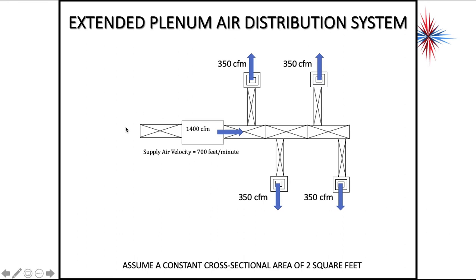This is an example of an extended plenum system. Let's assume a cross-sectional area of 2 square feet all the way through the duct work. Our supply velocity is 700 feet per minute. This gives us 1,400, because 2 square feet, 700 times 2 is 1,400.